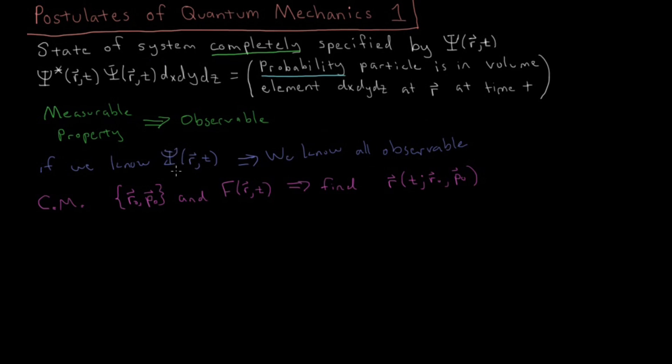but because in quantum mechanics, things aren't deterministic, we only have probabilities. We have to calculate observables by using the wave function instead of getting them directly from some deterministic set of trajectories.